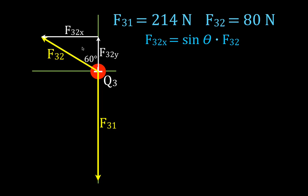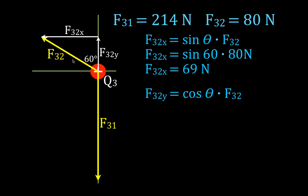F32x is on the opposite side of the angle, so we use the sine function, and we get that F32x is the sine of 60 degrees times 80 newtons, and we get that the length of that side is 69 newtons. Then we have F32y is the cosine, it's the adjacent side, and the cosine of 60 times 80 is 40 newtons.